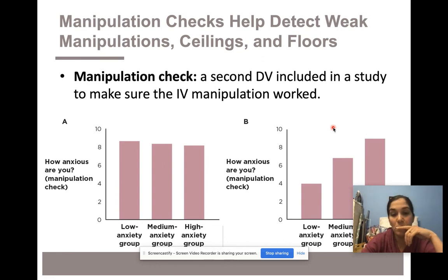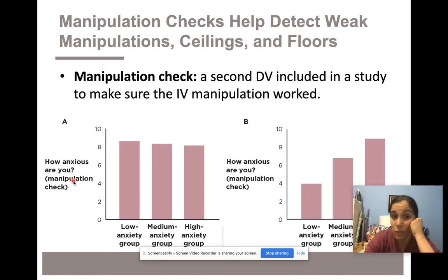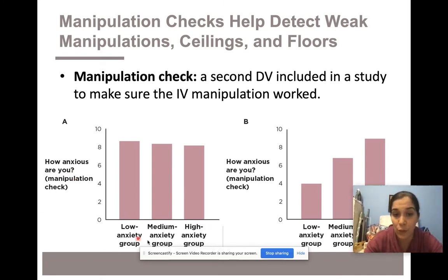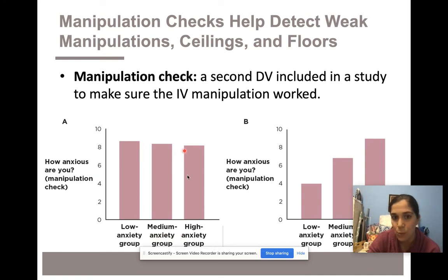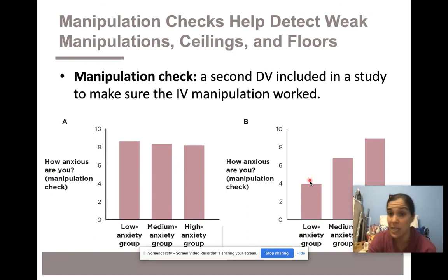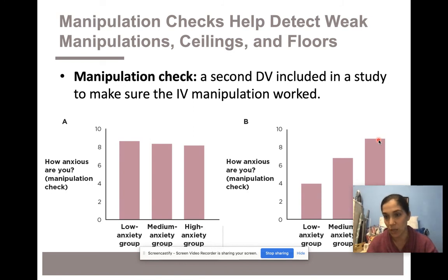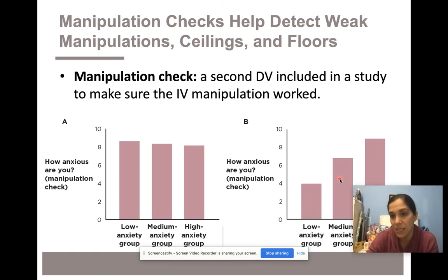In the anxiety example, you might include a separate manipulation check item: 'How anxious are you?' If the low, medium, and high anxiety groups don't differ on this self-report, the manipulation doesn't work and that's why you have ceiling effects. But if low anxiety reports a 4, medium reports a 7, and high reports a 9 on a scale of 1 to 10, your manipulation worked. If you still find no difference in logical reasoning after confirming the manipulation worked, then there is indeed no effect — the IV genuinely doesn't cause a change in the DV.